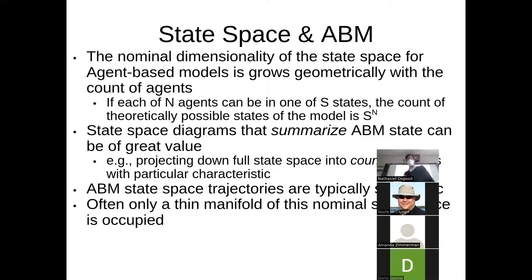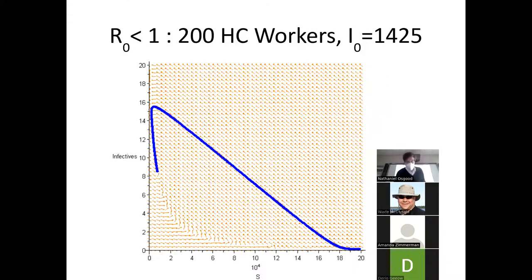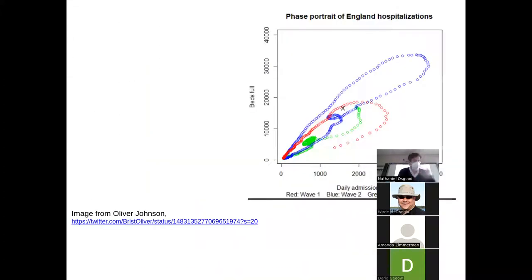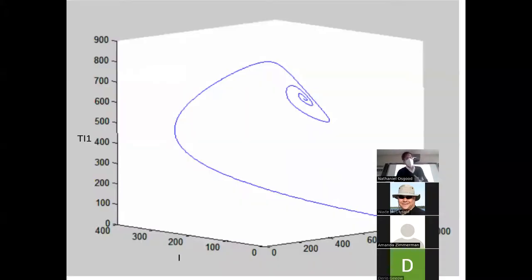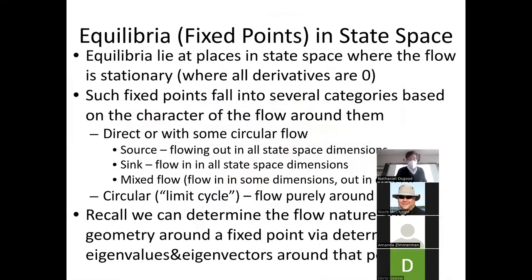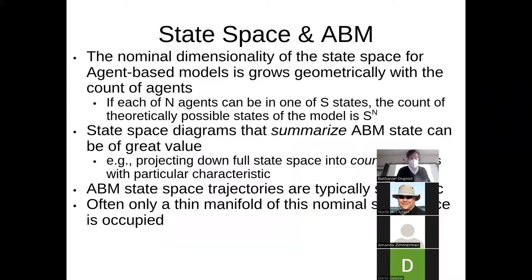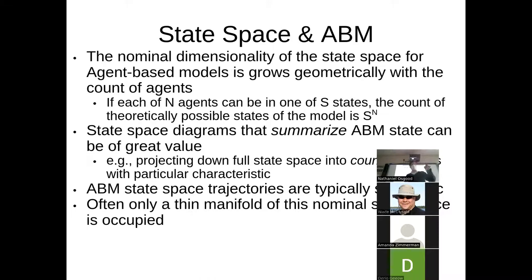What I really want to talk about now is state space and agent-based models. For the past few minutes I've been describing features of state space for aggregate systems, because they're simpler to think about. Now I want to expand our thinking to what a state space would look like for an agent-based model. Recall how I started this discussion — I asked what pieces of information you'd need to save away to totally characterize the state of that system so you could shut down your computer, come back later, plug those values in, and continue on.